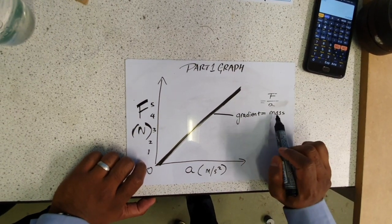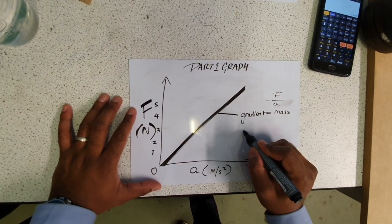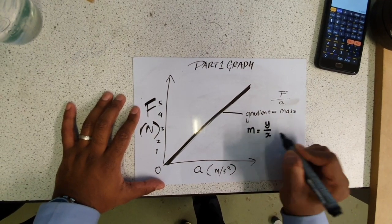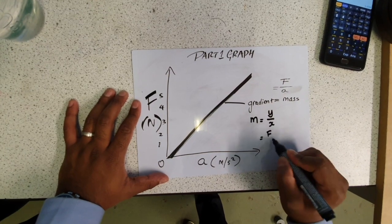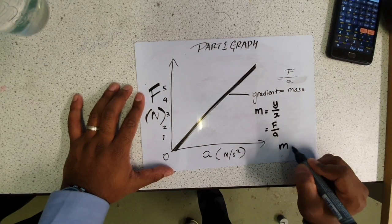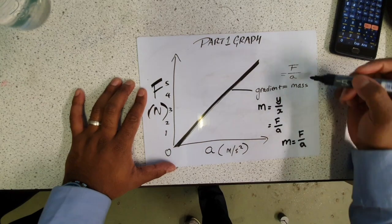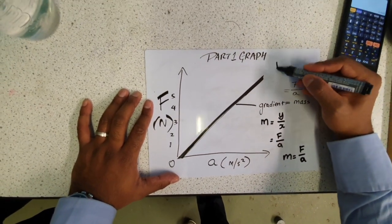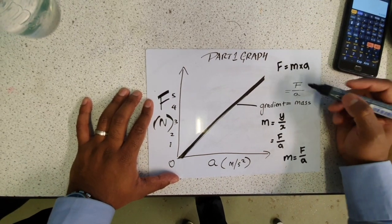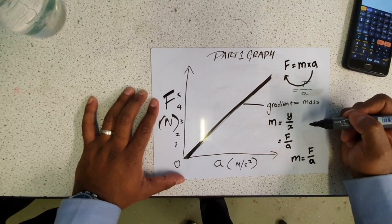Our gradient will be equal to mass. The reason why our gradient will be equal to mass is because gradient, also known as m, is equal to y divided by x. In this case, it is F divided by a, which is the same as saying mass equals F over a. When we go back to our Newton's second law equation where F equals m times a, if we want to make m the subject, we take a to the other side where it becomes F divided by a.